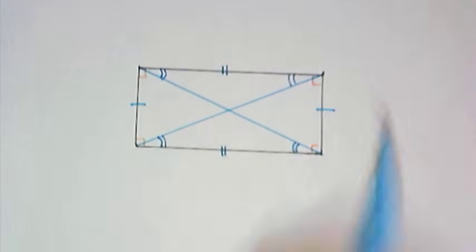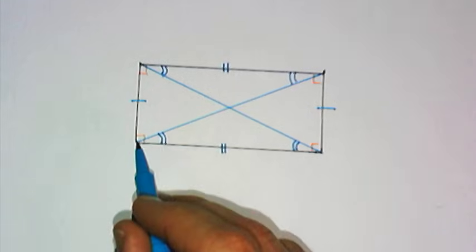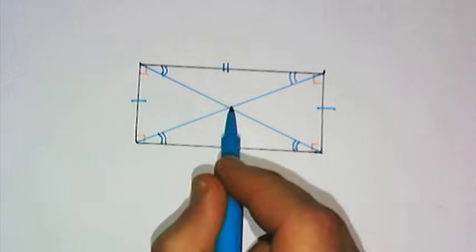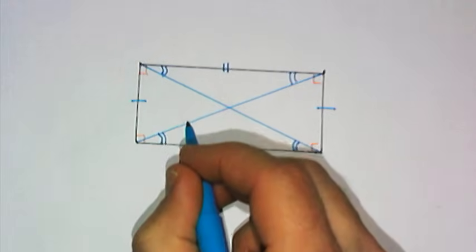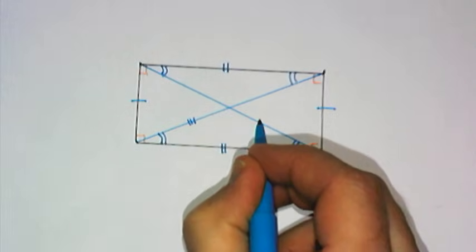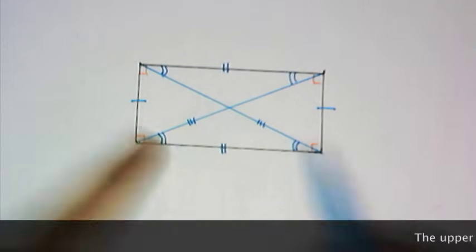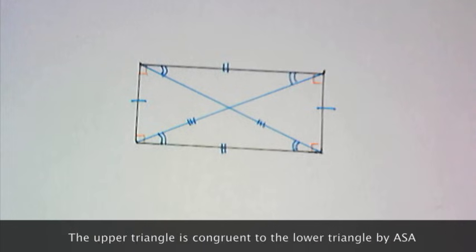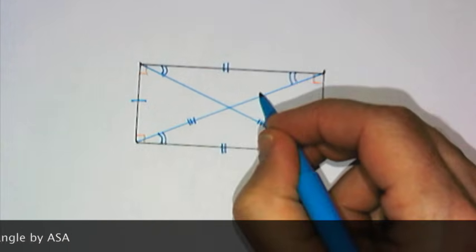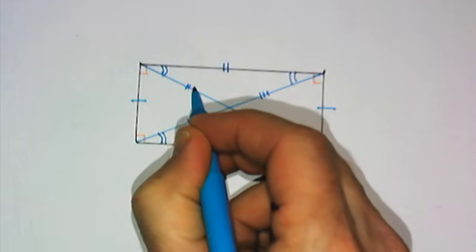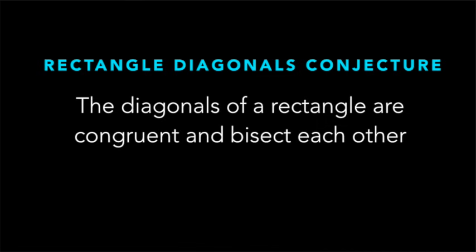If I look at this, it forms an isosceles triangle, which means that this side is congruent to this side. And since the diagonals were congruent in the first place, they bisect each other. This leads us to our next conjecture, the rectangle diagonals conjecture: the diagonals of a rectangle are congruent and they bisect each other.